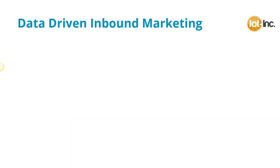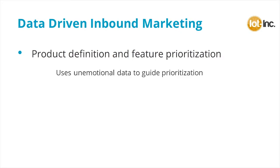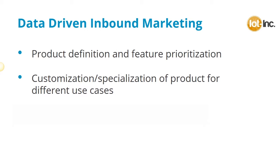Let's first discuss data-driven inbound marketing. Data from the customer and their product is used for product definition by prioritizing the features that are up for discussion. Product roadmap discussions can often become heated affairs between product management, engineering, and other departments. Using data to help guide this process simplifies everything and puts everybody on the same page. Interpreting the customer and product data enables us to customize our product with new options and develop brand new products and services.